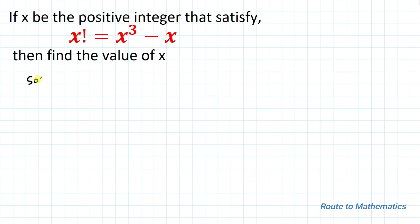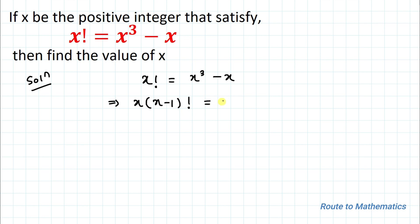We have the equation x factorial equals x cubed minus x. We can write x factorial as x multiplied with (x minus 1) factorial. On the right-hand side, taking x common gives x times (x squared minus 1). Cancelling x from both sides gives (x minus 1) factorial equals x squared minus 1.